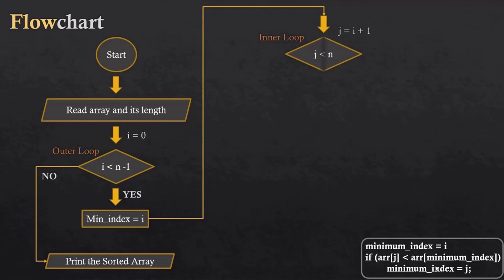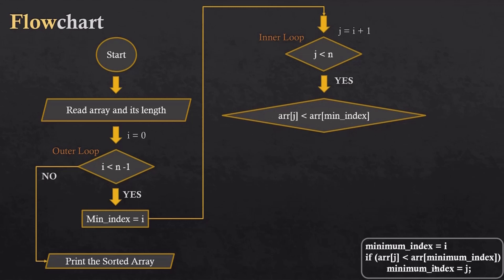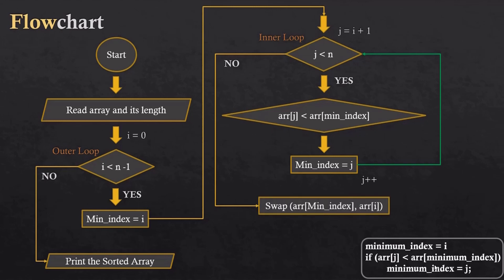We read the inner loop till the last index because we have to check all indexes to find the minimum element. When the inner loop condition is true, we run the check: if the current item is less than the current minimum, we update the minimum index. After that we jump to the next index. When the inner loop condition becomes false, we have found the minimum index and swap it with the i-th index. Then we increment the outer loop and repeat until the outer loop condition is false, giving us the sorted array.